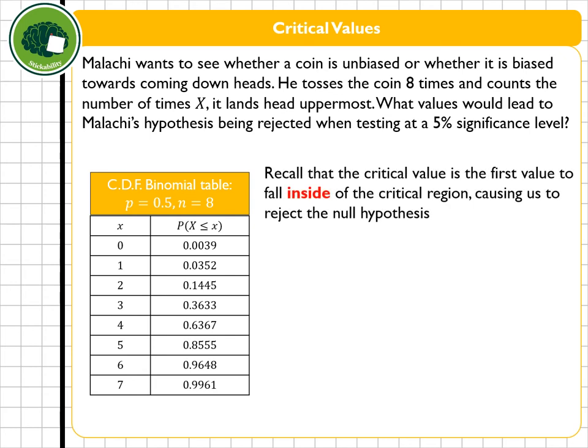Now it's important at this point to recall that the critical value is the first value to fall inside of the critical region causing us to reject the null hypothesis. Now if we toss a coin eight times we're expecting heads to land uppermost four times because we do the eight times the 0.5, so I'm expecting my critical region to be somewhere over here. Now because I want the extreme values I'm going to start from the end and work my way upwards, so for example the probability of x being bigger or equal to seven is one minus the probability of x being less than or equal to six, which is one minus 0.9648, which gives me 0.0352. That value is less than 0.05 so is in the critical region.